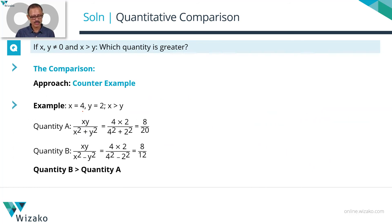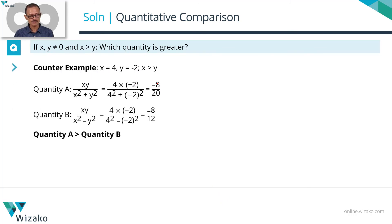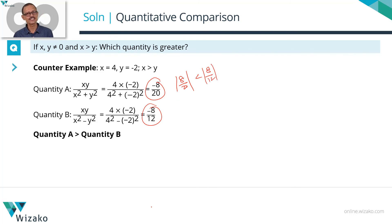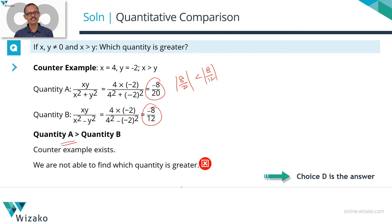Quick recap: with x = 4, y = 2 we get 8/20 versus 8/12 — same numerator, lower denominator means greater value, so Quantity B > Quantity A. With x = 4, y = −2 we get −8/20 versus −8/12 — lower magnitude negative number is larger, so Quantity A > Quantity B. Both possibilities exist, meaning we cannot compare the two quantities. Choice D is the answer.